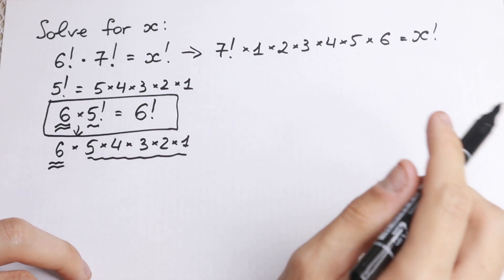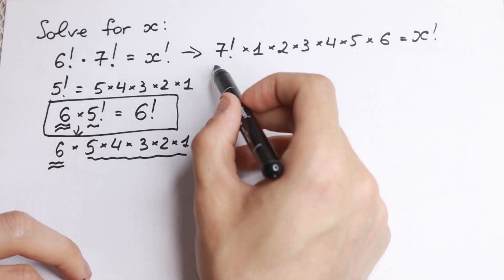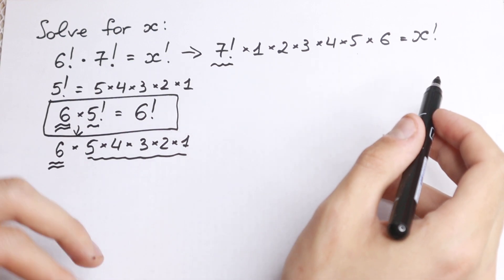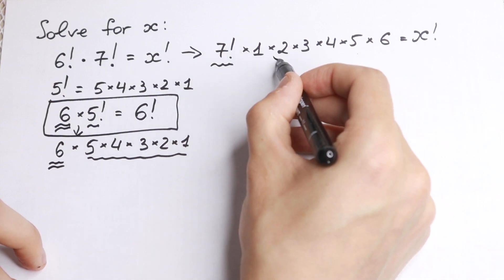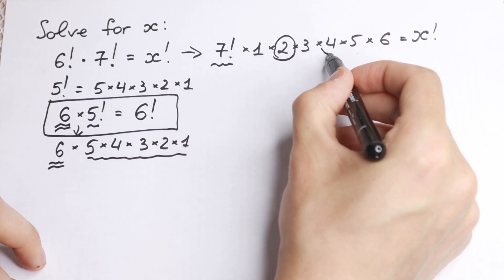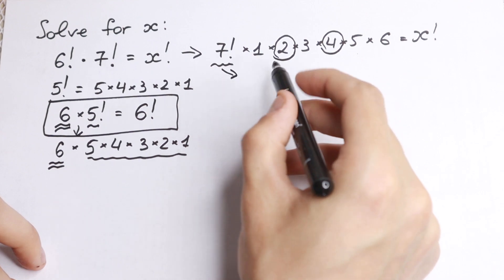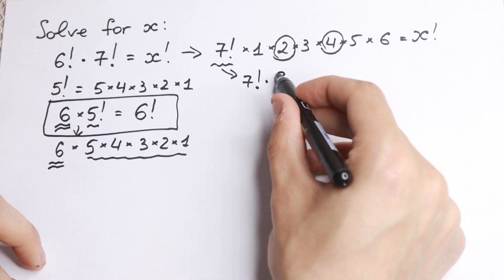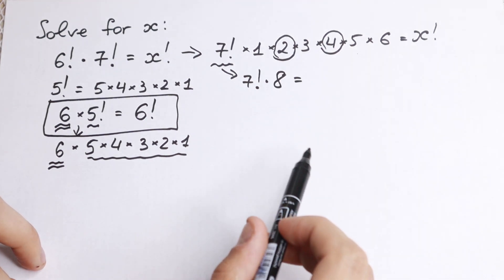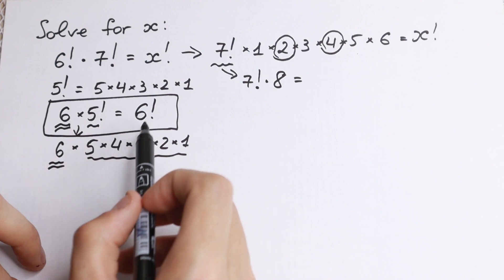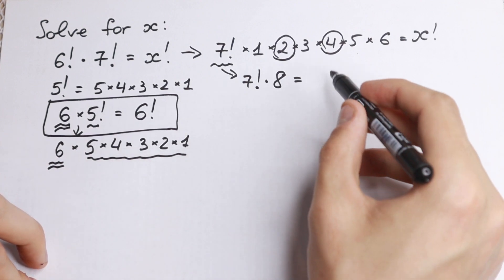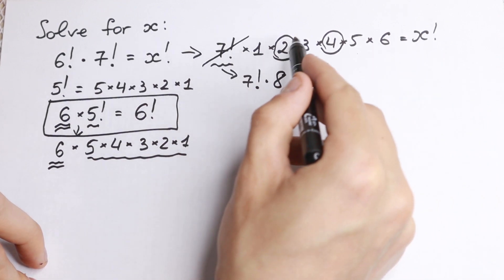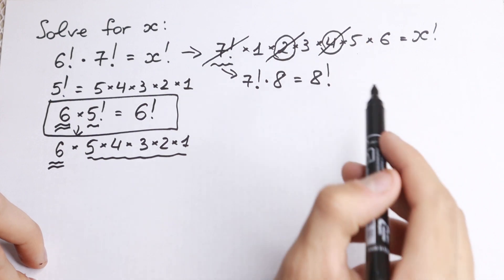Take a look closely — we know this formula. We have 7 factorial. If we multiply 7 factorial by 8, we can use our rule. Notice that 2 times 4 equals 8, so multiplying 7 factorial by 2 and by 4 is the same as multiplying by 8. Therefore 7 factorial times 8 equals 8 factorial. We can replace 7 factorial, the 2, and the 4 with 8 factorial.